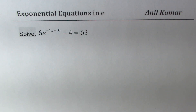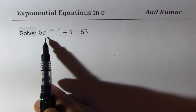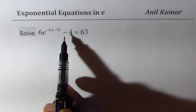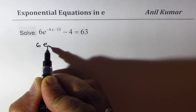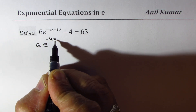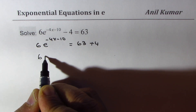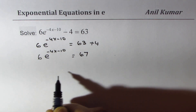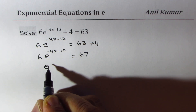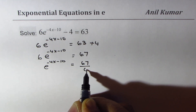Now here is a practice question for you. Follow the steps we did before. We need to solve 6 times e to the power of minus 4x minus 10 minus 4 equals 63. Adding 4 gives 6 times e to the power of minus 4x minus 10 equals 67. Dividing by 6 gives e to the power of minus 4x minus 10 equals 67/6.